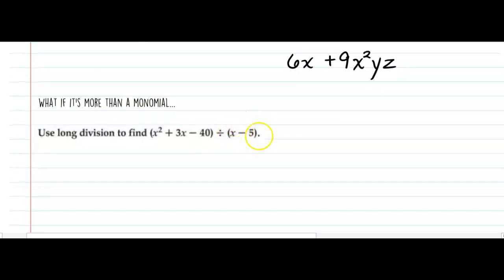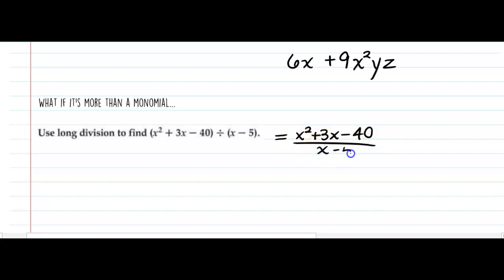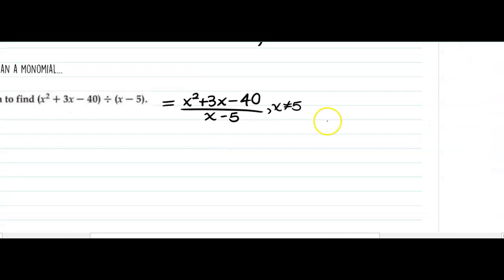But what if it's more than a monomial? What this literally means is x squared plus 3x minus 40 divided by x minus 5. Here I have a binomial — kind of like we had in our first example, where we would also say by the way x cannot equal 5, where the denominator is 0. We need to do long division, kind of like you did way back in 3rd or 4th grade. It's going to have a very similar feel but with variables mixed in.